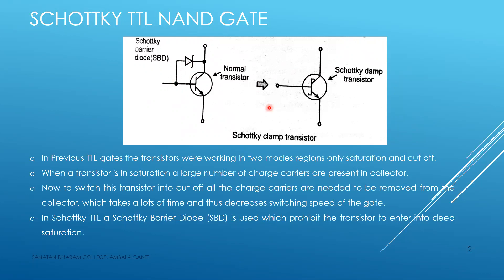The normal TTL gate operates in only two modes: saturation mode and cutoff mode. When the transistor is on, it is in saturation mode. In saturation mode, all the charge carriers are stored in the collector. To switch the transistor off, we have to remove all the charge carriers from the collector. When the transistor is in deep saturation, there is a delay in switching it on and off.